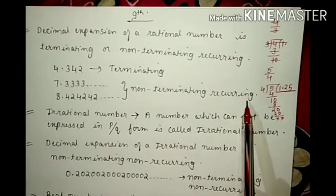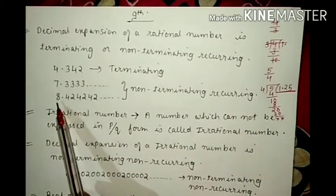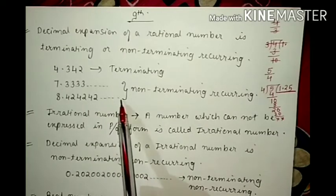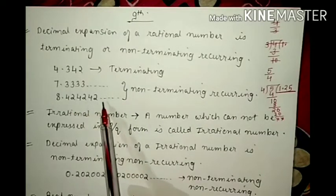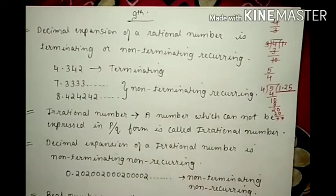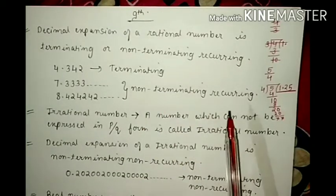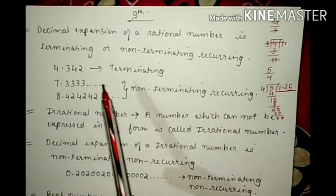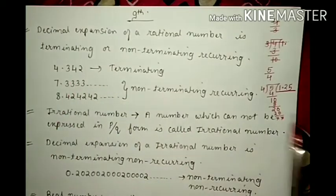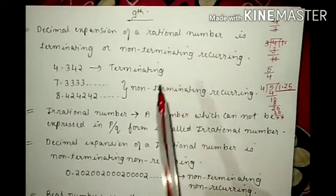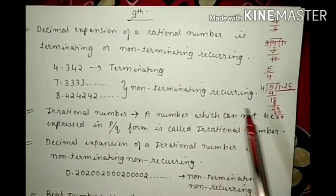Repeating is written as recurring. Now another number is 8.424242... — that means 42 is repeating every time. So this number is also non-terminating recurring. So all these numbers are rational numbers, since a rational number can be terminating or non-terminating recurring.